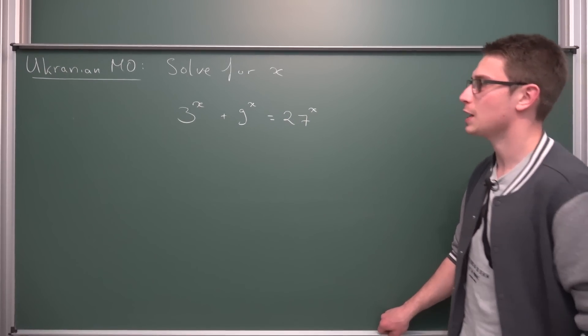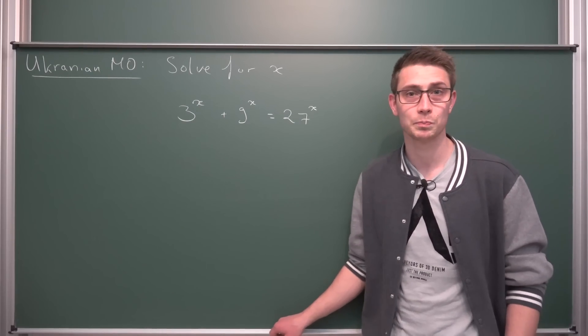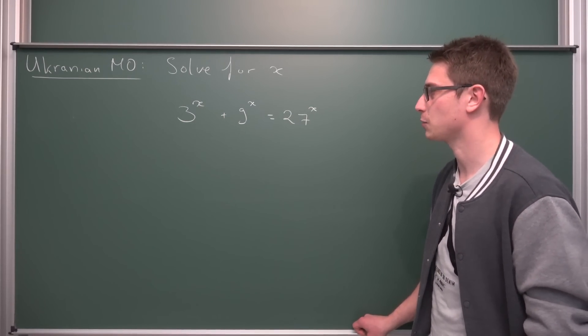Solve for x in 3 to the x power plus 9 to the x is equal to 27 to the x power. Hope you are going to enjoy the video and now we are going to dive right in.